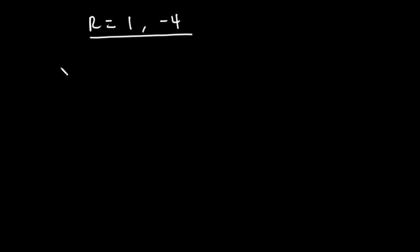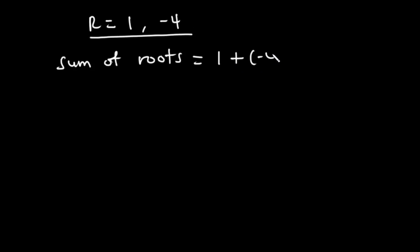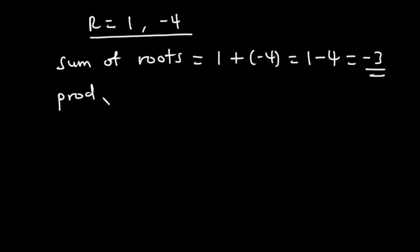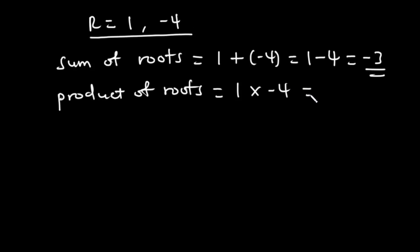Let's try another example. If the roots of a quadratic equation are 1 and negative 4, how do we generate the quadratic equation? The sum of roots is equal to 1 plus negative 4, which is 1 minus 4, equal to negative 3. The product of roots is equal to 1 times negative 4, which is negative 4.